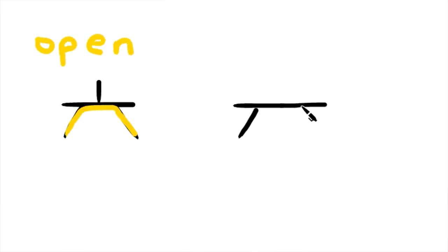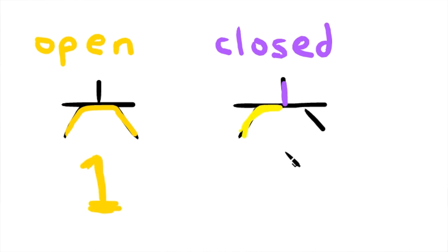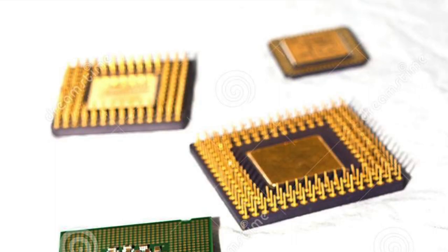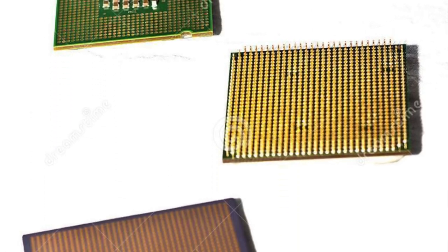These switches have one job, to continue or block the flow of electricity, actions represented by the data values 1 and 0 respectively. These data values are called bits. To make better computers over the years, scientists have been trying to squeeze more and more transistors into microchips.